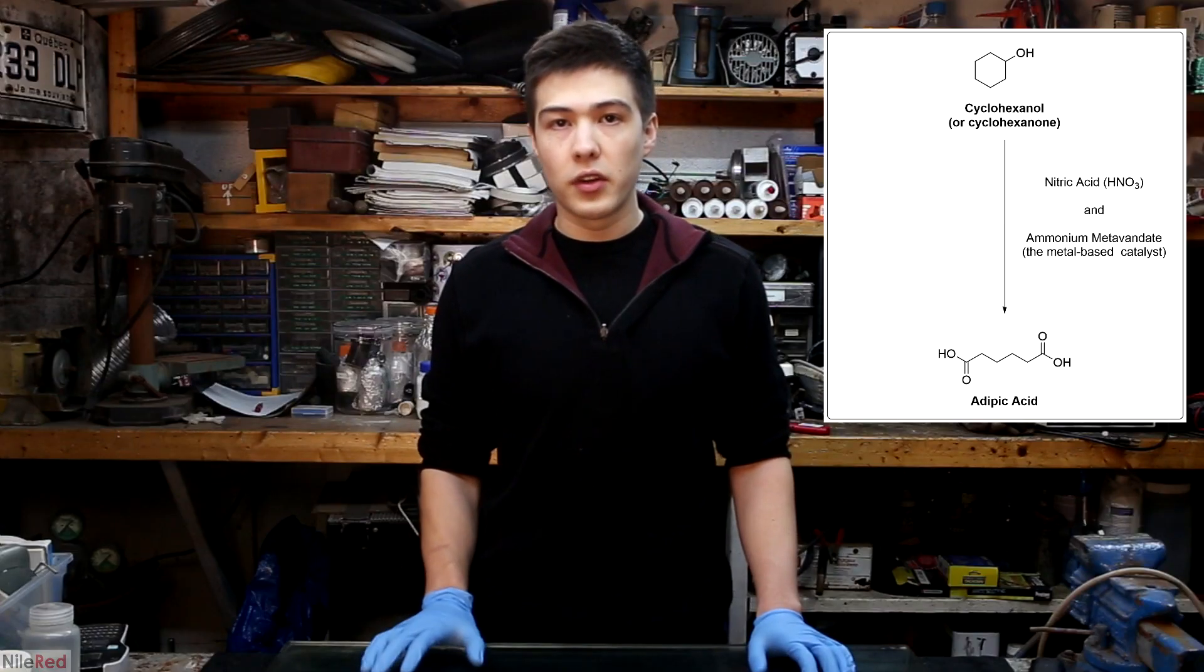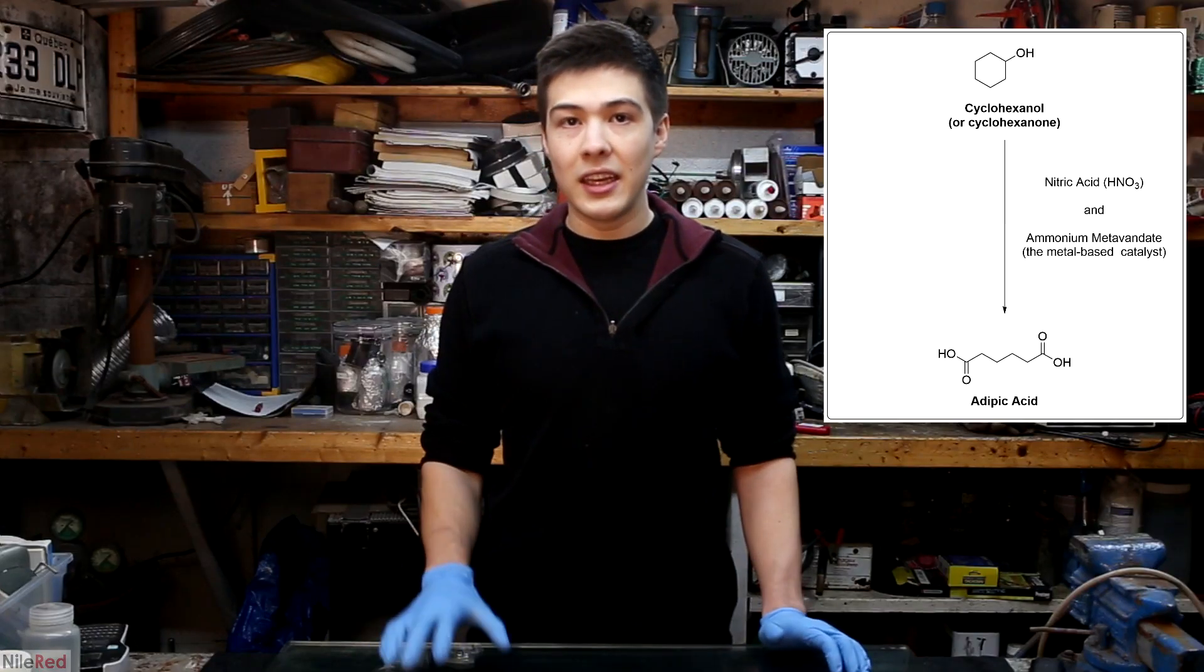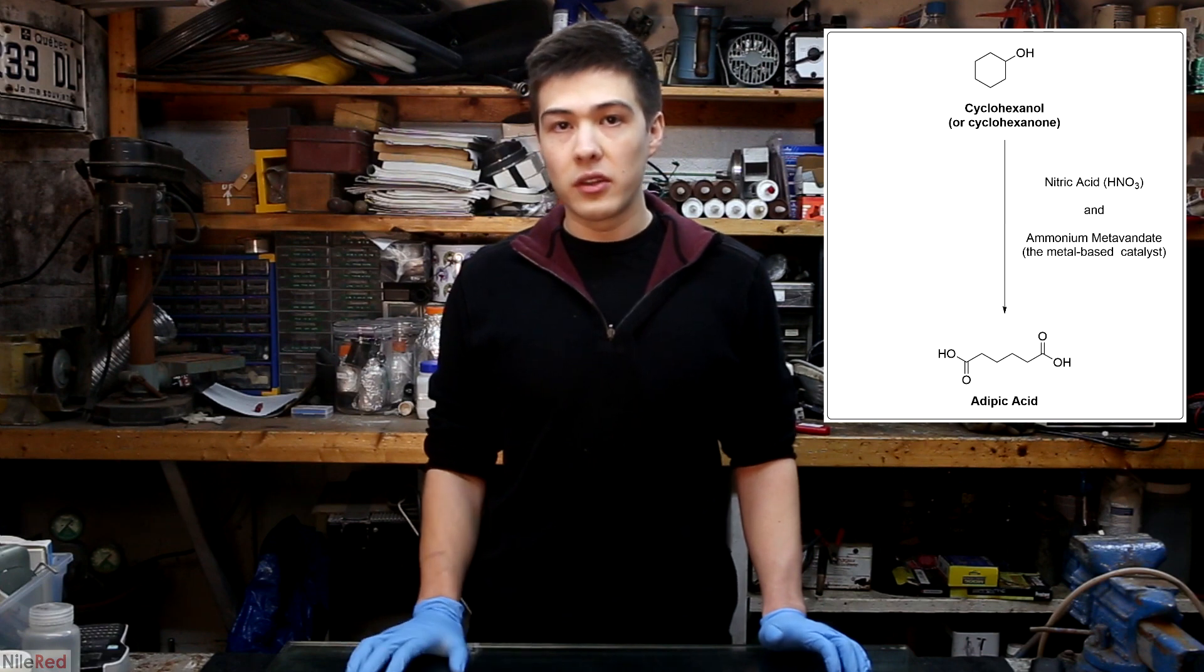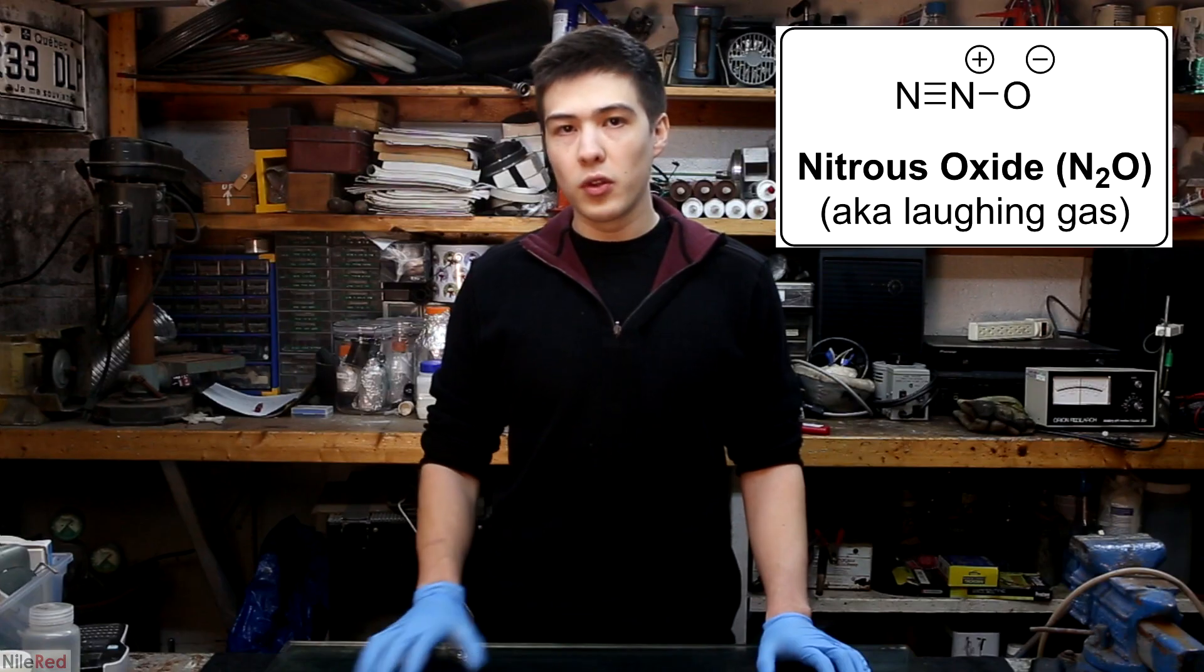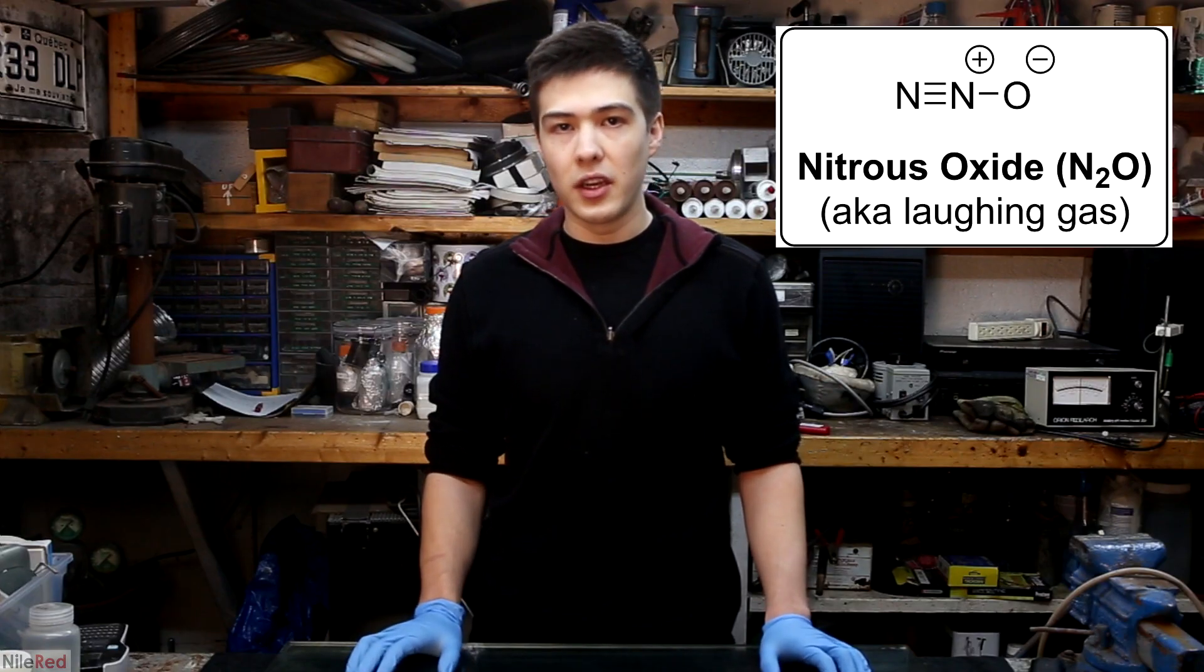Cyclohexanol is typically converted to adipic acid by heating it in nitric acid along with a metal catalyst. However, this produces a lot of nitrous oxide gas, which contributes to both global warming and the depletion of the ozone. For many reactions, this wouldn't really be a huge issue, but adipic acid is produced on a massive scale.